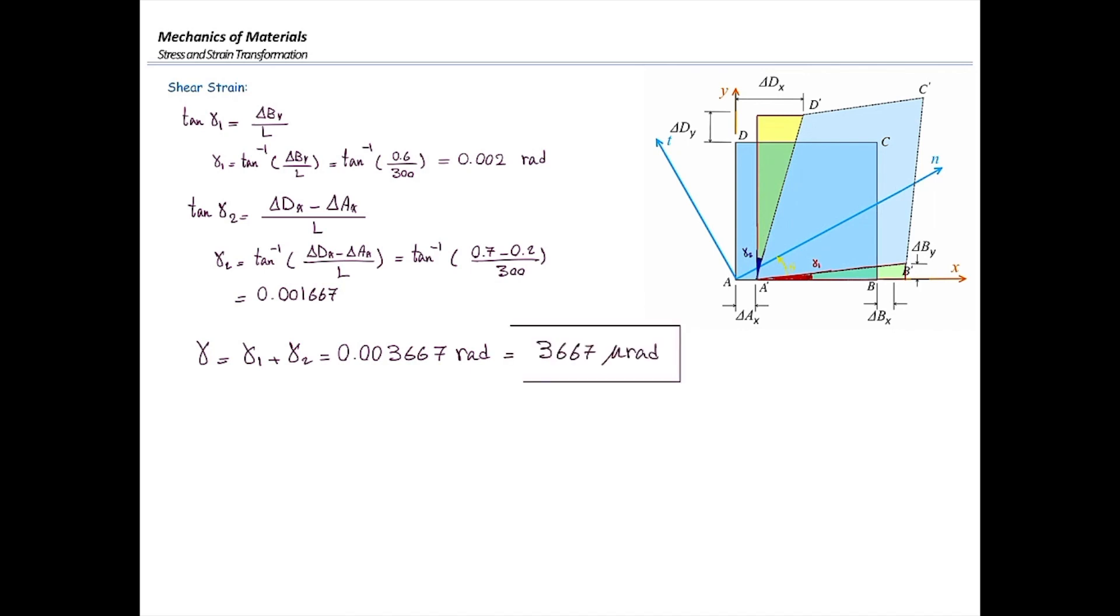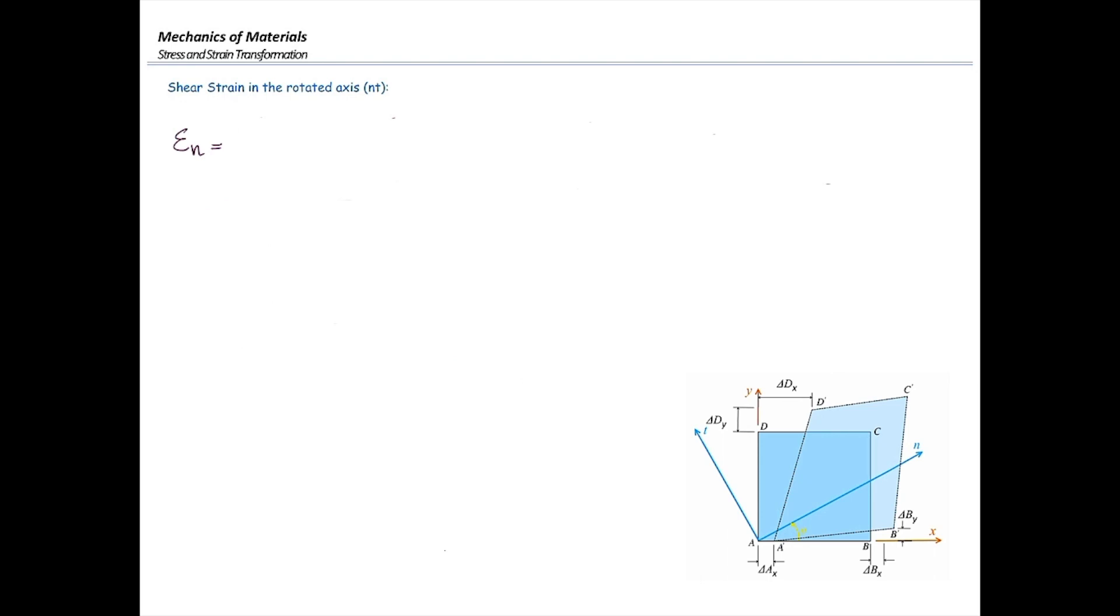After determining normal and shear strains, the rest is simply plug them into strain transformation equation. Shear strain transformation is epsilon N is epsilon X plus epsilon Y over 2 plus epsilon X minus epsilon Y over 2 multiplied by cosine of 2 theta plus gamma XY over 2 sine of 2 theta. Epsilon XY and gamma XY were determined. I would just plug in the numbers with the given theta. And that would give me epsilon N equal to 2047 micro epsilon.